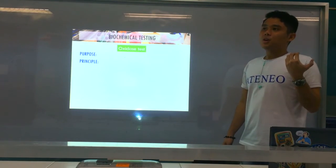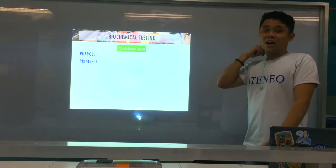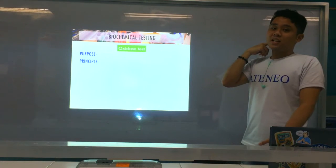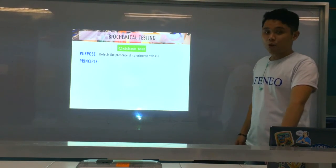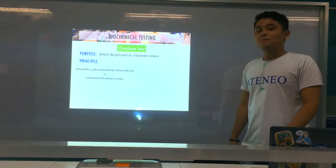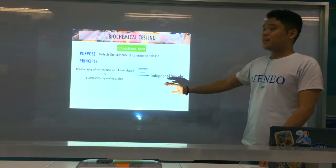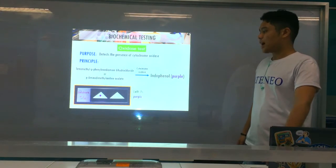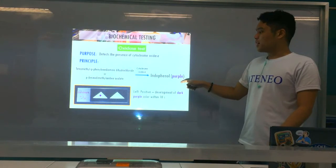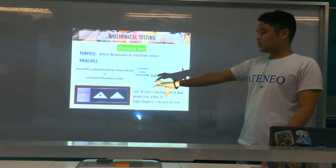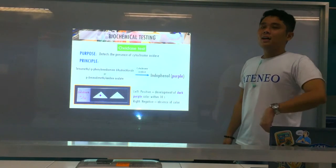The oxidase test was mentioned in the Gram-negative Cocci biochemical testing for Neisseria, Veillonella, and Moraxella, which are all oxidase positive. For Enterobacteriaceae biochemical testing, all Enterobacteriaceae are oxidase negative. It detects the presence of the enzyme cytochrome oxidase. The substrate is tetramethyl-p-phenylenediamine dihydrochloride or p-aminodimethylaniline oxalate. In the presence of cytochrome oxidase, it becomes indophenol, which is purple in color. A positive reaction is the development of a purple color within 10 seconds.